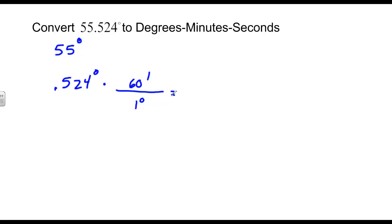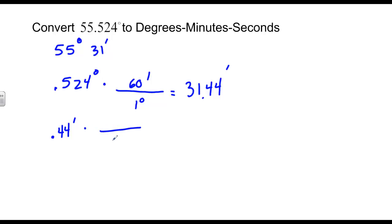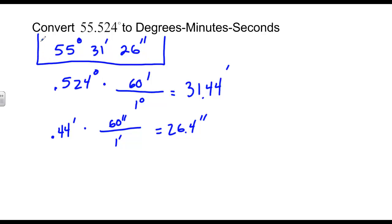We can find the minutes part by multiplying together. If we take 0.524 and multiply that by 60, we get 31.44 minutes. So right now we have 55 degrees, 31 minutes, but we have 0.44 of a minute left, so we're going to convert 0.44 minutes to seconds using dimensional analysis. 1 minute is equal to 60 seconds, so 0.44 times 60 gets us 26.4 seconds. We'll just say 26 seconds. So 55.524 decimal degrees is equivalent to 55 degrees, 31 minutes, and 26 seconds.